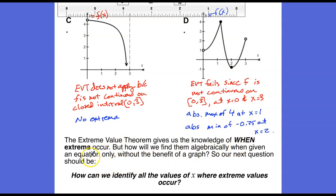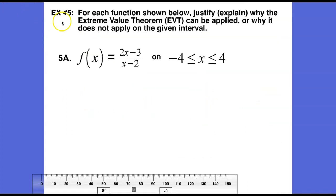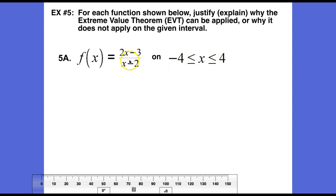The extreme value theorem tells us when extrema occur, but how do we find them algebraically given only an equation without a graph? The next question is how can we identify all the values of x where extreme values occur. In example 5a, f of x equals 2x minus 3 over x minus 2, a rational function, on the closed interval from negative 4 to 4.